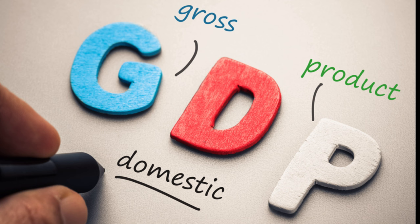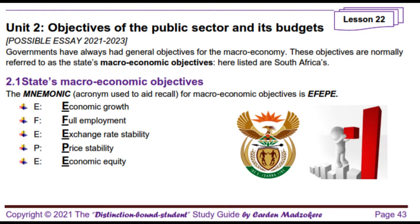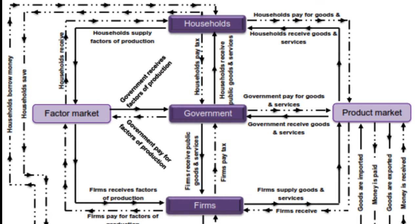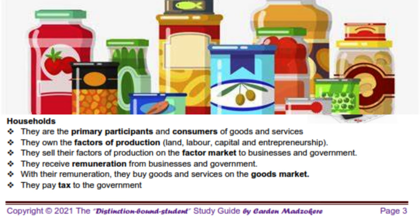Economic growth deals with things, and economic development deals with people. Economic development policies aim at the economic and social well-being of people, whereas economic growth policies focus on increasing the production capacity of goods and services. If the government makes growth a priority, they implement policies that encourage production, which requires the four factors of production: land, labor, capital and entrepreneurship. These are owned by households, who get paid for these factors and use that income to buy goods and services — improving their standards of living. So by focusing on economic growth, the government indirectly and positively affects economic development, since growth leads to development.